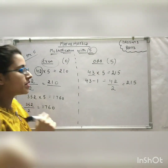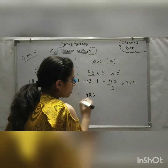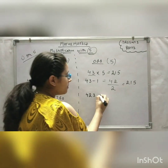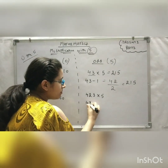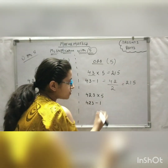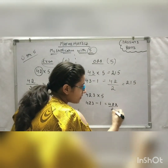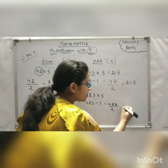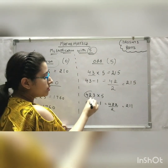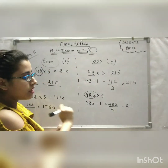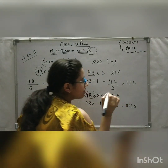Let's try one more example. Suppose we have 423 multiplied by 5. Take the number 423, subtract 1 from it, and you get 422. Divide 422 by 2 and you get 211. Since 423 was an odd number, put 5 at the end. So your answer is 2115.